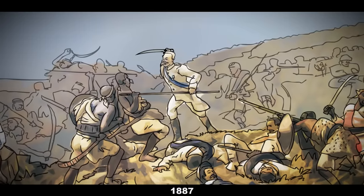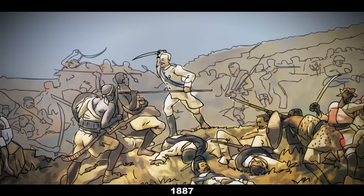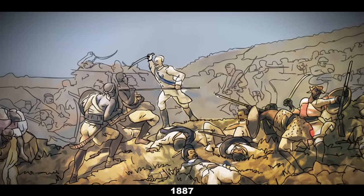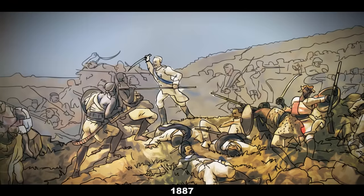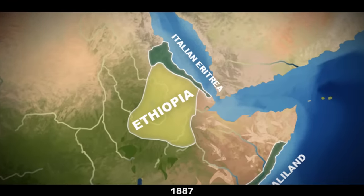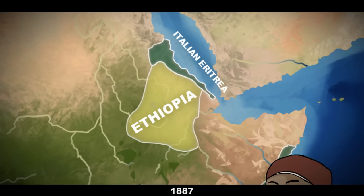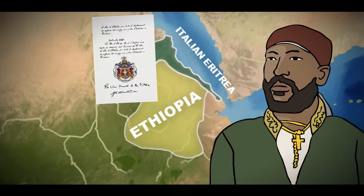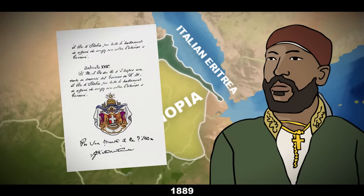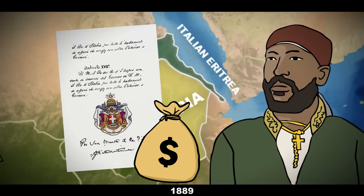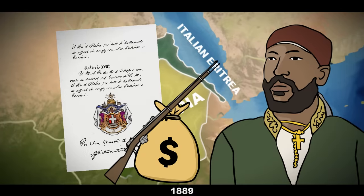By 1887, skirmishes were occurring between the Italians and local Ethiopian warriors. This culminated in the Battle of Dogali, in which an Italian column was ambushed and destroyed by the Ethiopians. After this, the Italians were determined to pacify Ethiopia, and they saw their chance when its emperor died and the throne was claimed by the Italian-supported Menelik II. Italy signed a treaty with Menelik that promised backing to his claim, as well as financial and military aid, in exchange for recognition of Italy's colonial territories.